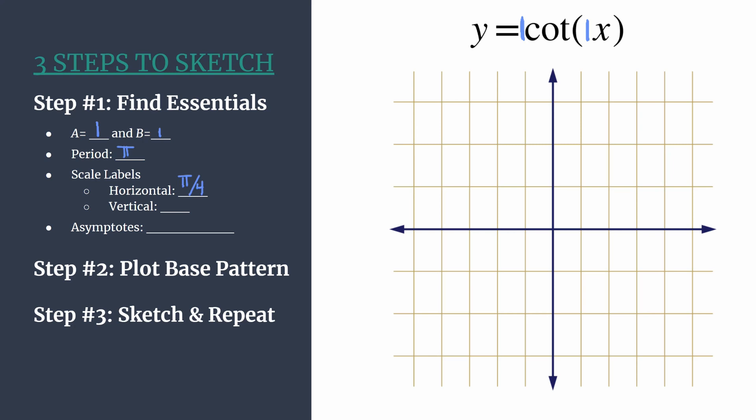For our vertical axis, one is usually a really simple but effective scale. Let's go ahead and label our axes now. Starting with the horizontal axis, count by pi over four. So we have one pi over four, two pi over four reduces to pi over two, three pi over four, four pi over four reduces to pi, and then five pi over four.